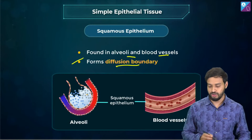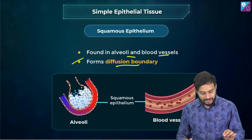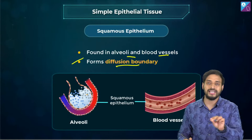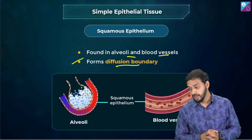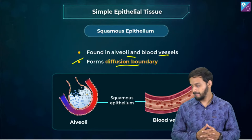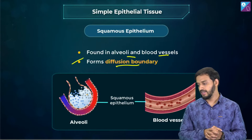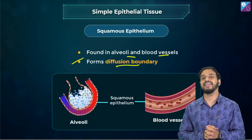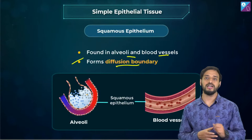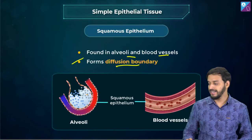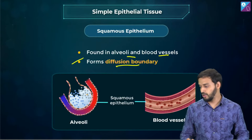Squamous epithelium is found in the alveoli and blood vessels, and forms diffusion boundaries. Why is simple epithelium present in areas where diffusion occurs? Because it is a single layer, it is thin — diffusion can happen easily. Multiple layers would create difficulties. Flatness and thinness as a single layer is the key characteristic feature.